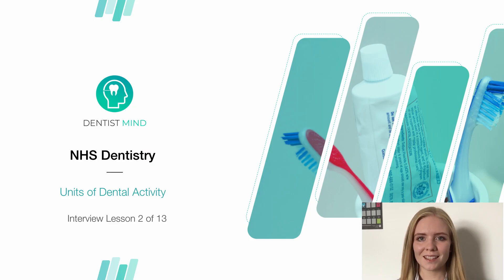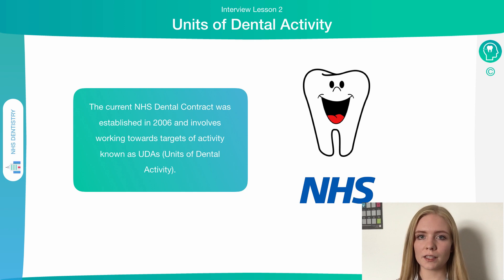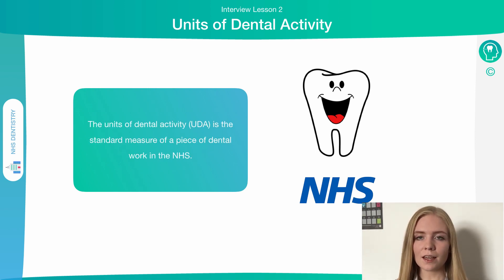Welcome to the second lesson on NHS Dentistry. This time we're going to look at units of dental activity and how these relate to being a general dental practitioner. The current contract for NHS Dentistry in the UK was set out in 2006, and this was a targeted approach — a dentist is given a target number of treatments to perform in a year, which are measured in UDAs, which stands for Units of Dental Activity. A UDA is a measurement of what dental treatment is provided.